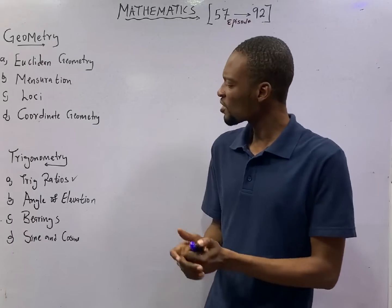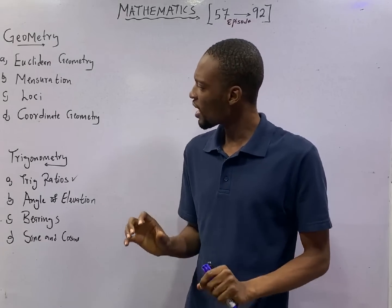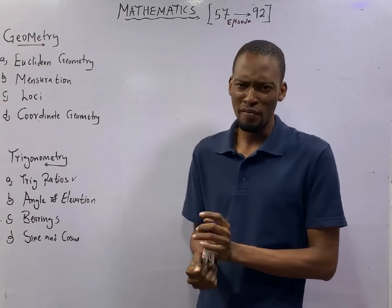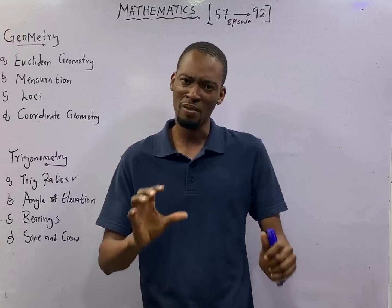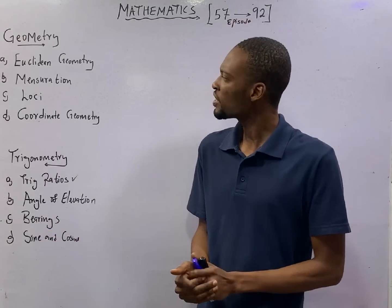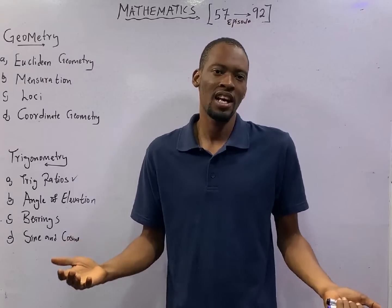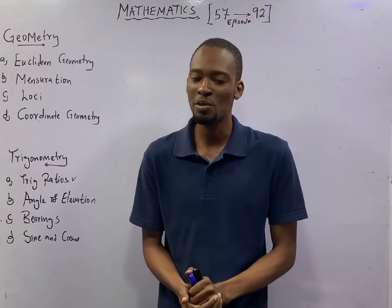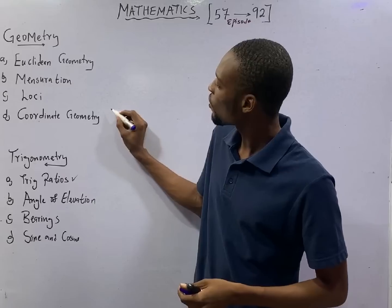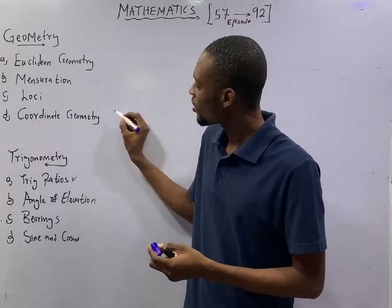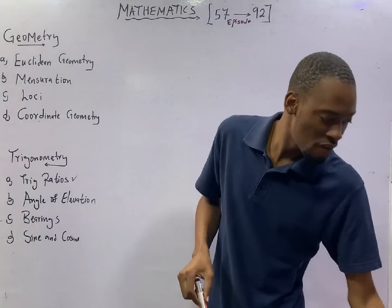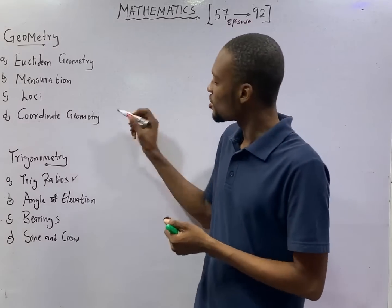This is episode number 71 of the 120 days to jam mathematics with Flash Isaac. In this episode, I am happy to announce to you that we shall be touching at least one question — our first question — under coordinate geometry.